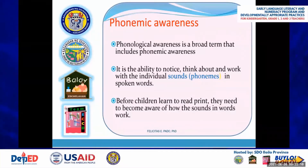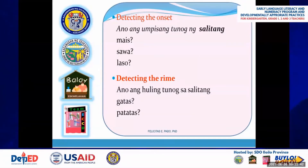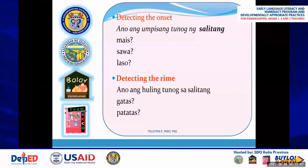Activities for phonemic awareness include detecting the onset — for example, identifying the beginning sound of the word mais as 'mm', sawa as 'ss', and laso as 'l' — and detecting the rime, such as identifying the final sound in the word gatas as 'ss', and patatas as 'ssss'.